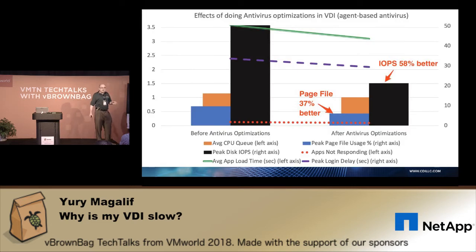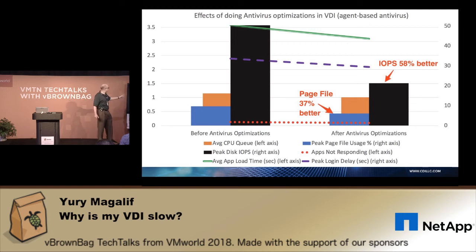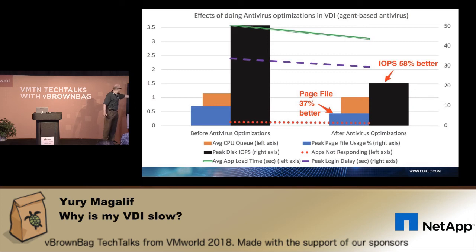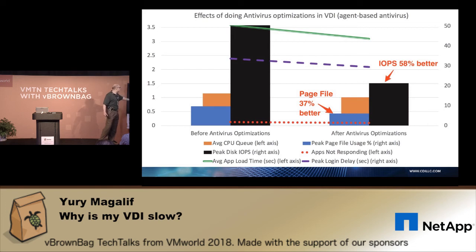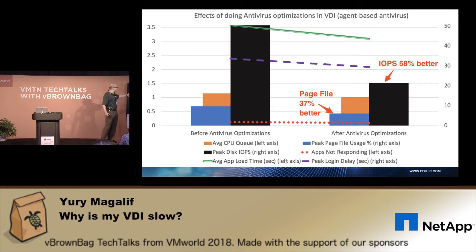Another important optimization is antivirus. Here's a real example of antivirus optimization. Before optimization, the peak disk IOPS — the black bar — dropped by 58% after optimization, because antivirus is no longer running scheduled scans; only real-time scanning remains. The blue bar, page file utilization, also went down, because antivirus is no longer accessing disk and memory repeatedly. So we gained both page file performance and IOPS performance by optimizing antivirus.